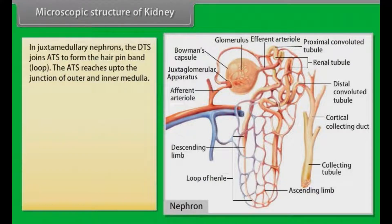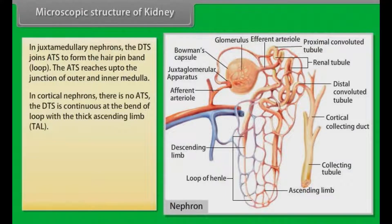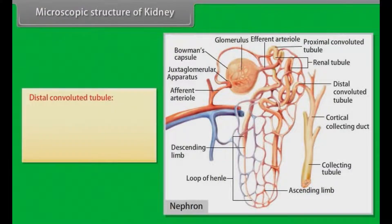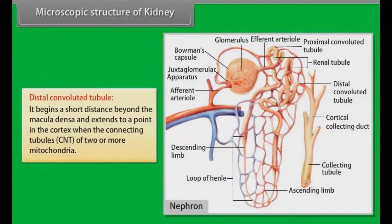The ascending thin segment reaches up to the junction of the outer and inner medulla. In cortical nephrons, there is no ascending thin segment. The descending thin segment is continuous at the bend of the loop with the thick ascending limb. Near the end of the thick ascending limb, the nephron passes between its afferent and efferent arterioles. This short segment is called the macula densa. The distal convoluted tubule begins a short distance beyond the macula densa and extends into the cortex.